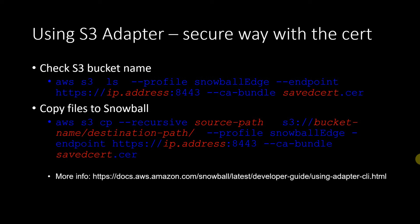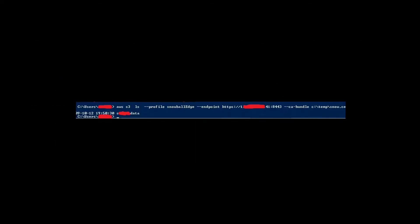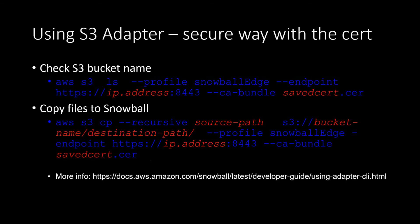Here is the command to list the bucket name in the Snowball Edge. It will give you the name of your S3 bucket, which you'll use when copying files. If you use the secure method, you specify port 8443 and the certificate file. If you don't use secure transfer, you use a different port and don't need the certificate file. You can find more information from the link shown here.